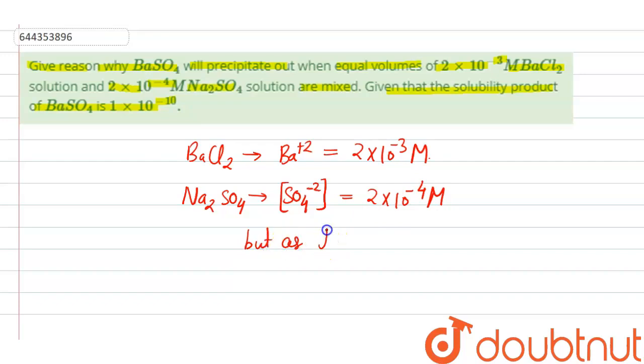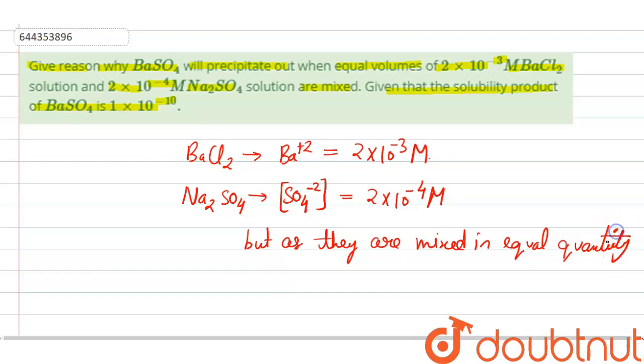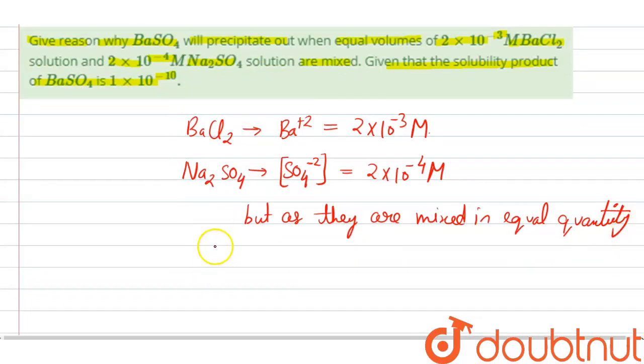But, as they are mixed in equal quantities, in solution we will get the concentration of barium ion as half of the given concentration, 1×10⁻³ M. And similarly, the concentration of sulfate ion will be half of the given concentration because they are mixed in equal quantity.